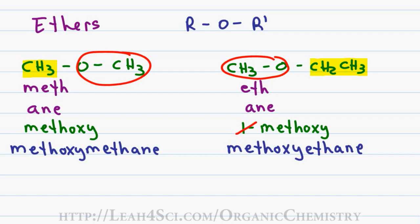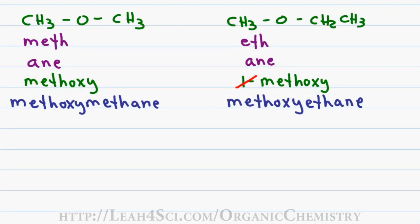The common name for an ether involves naming the two substituents that are attached to the oxygen followed by the word ether. If the two groups are different you can arrange them in alphabetical order. Looking back at the first one I have a methyl group on the left gives me methyl, a methyl group on the right would give me another methyl but since it's two the same I'll use dimethyl followed by the word ether.